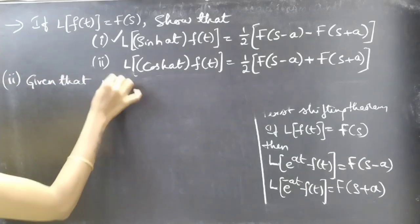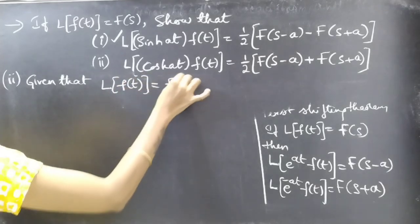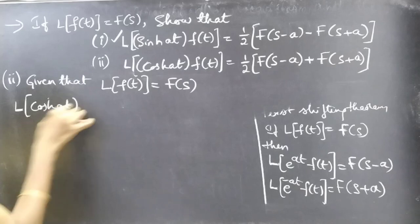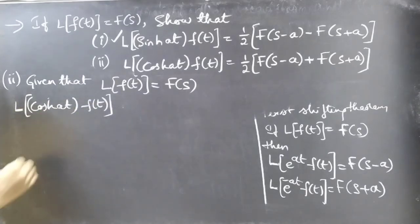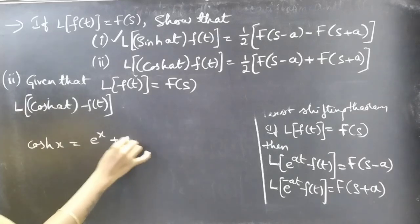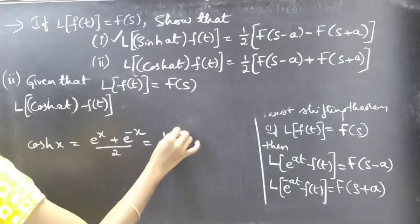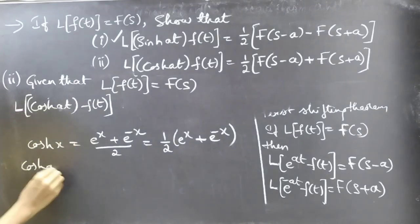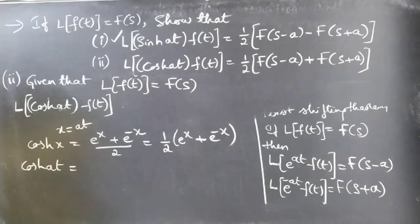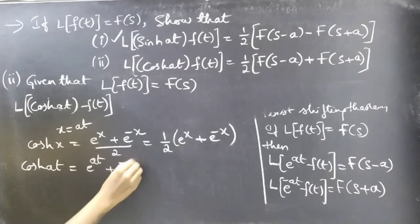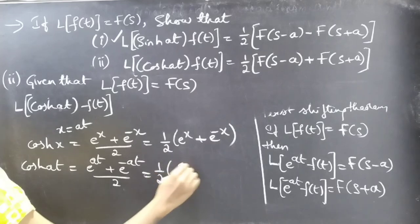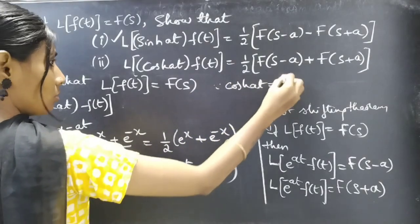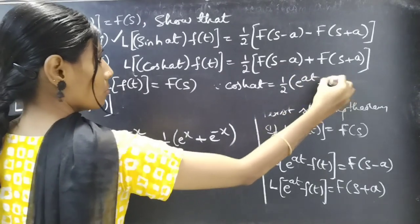Now coming to the second one. Given L{f(t)} = F(s), we need to prove L{cosh(at) · f(t)} = (1/2)[F(s-a) + F(s+a)]. We know that cosh(x) = (e^x + e^(-x)) / 2, or (1/2)(e^x + e^(-x)). Replacing x by at, we get cosh(at) = (1/2)(e^(at) + e^(-at)).